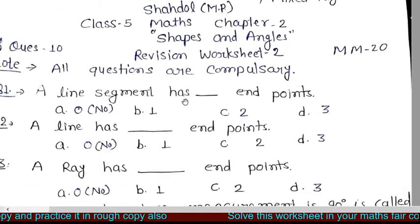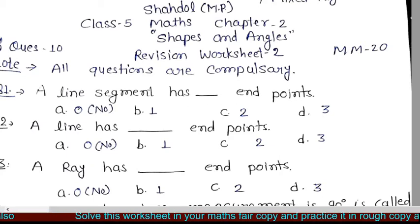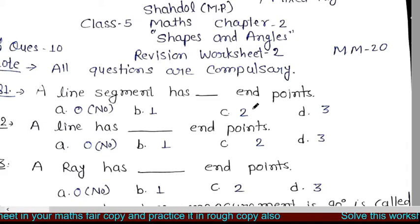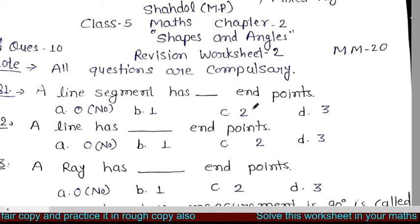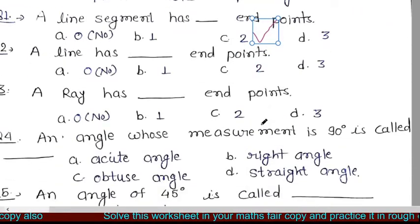You have to choose the correct answer. Question 1 is: a line segment has dash endpoints. Line segment के कितने endpoints होते हैं? As I explained in the previous revision worksheet and in the introduction to lines video, there are two endpoints in a line segment.